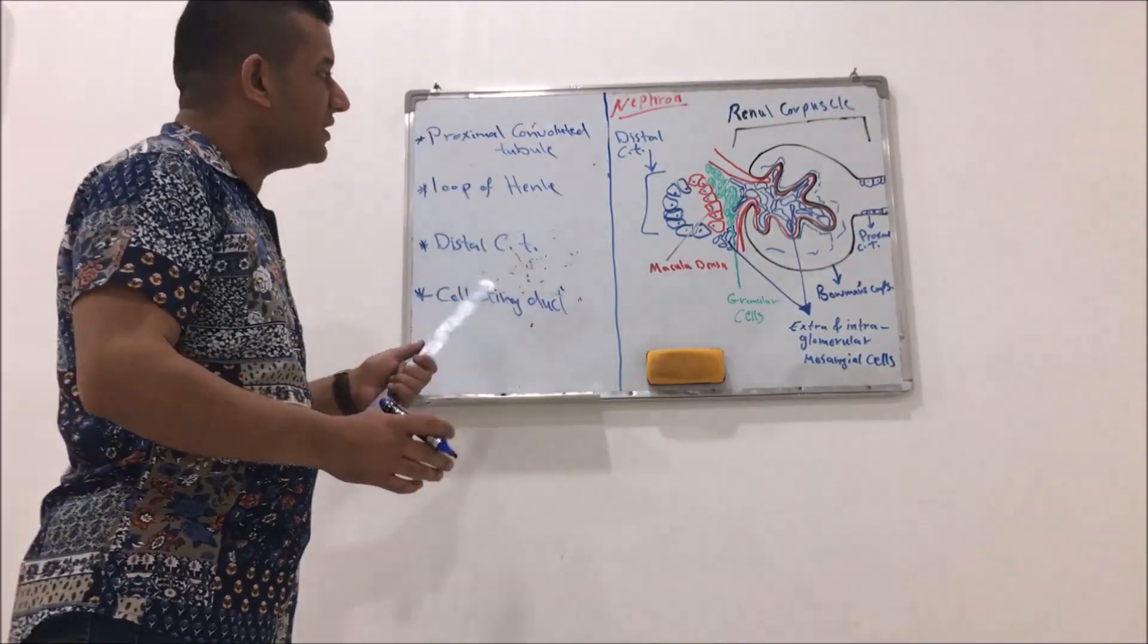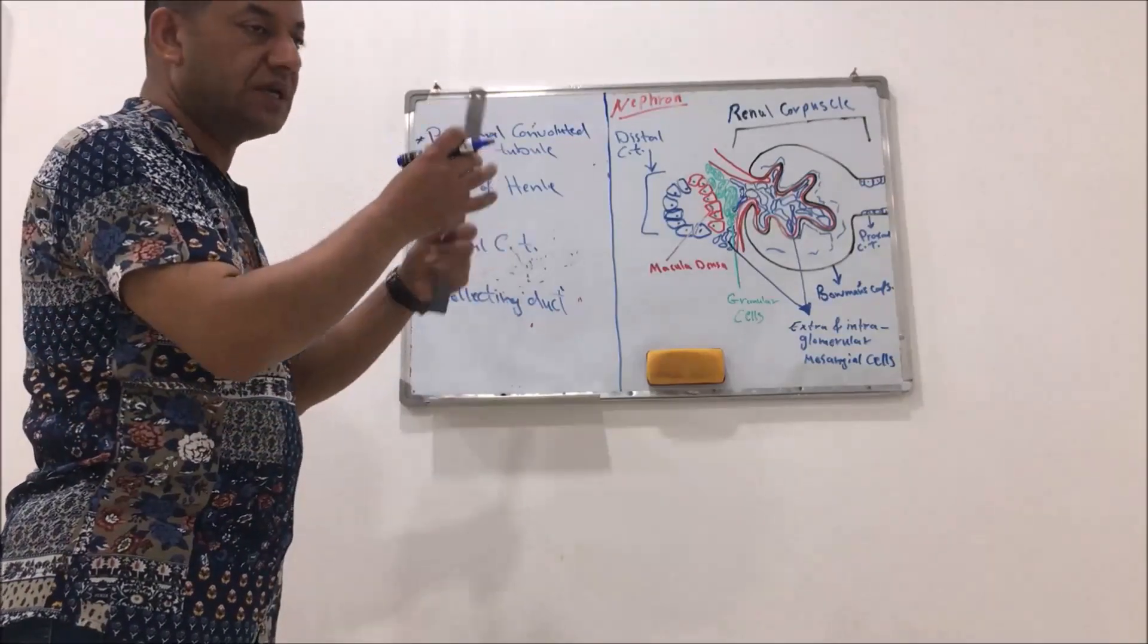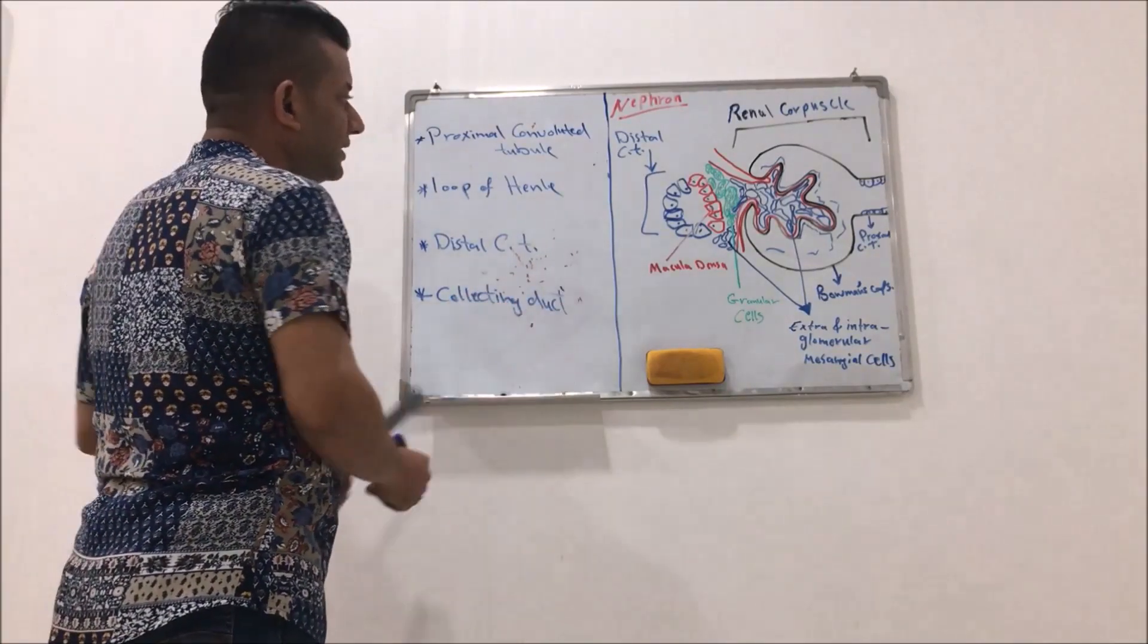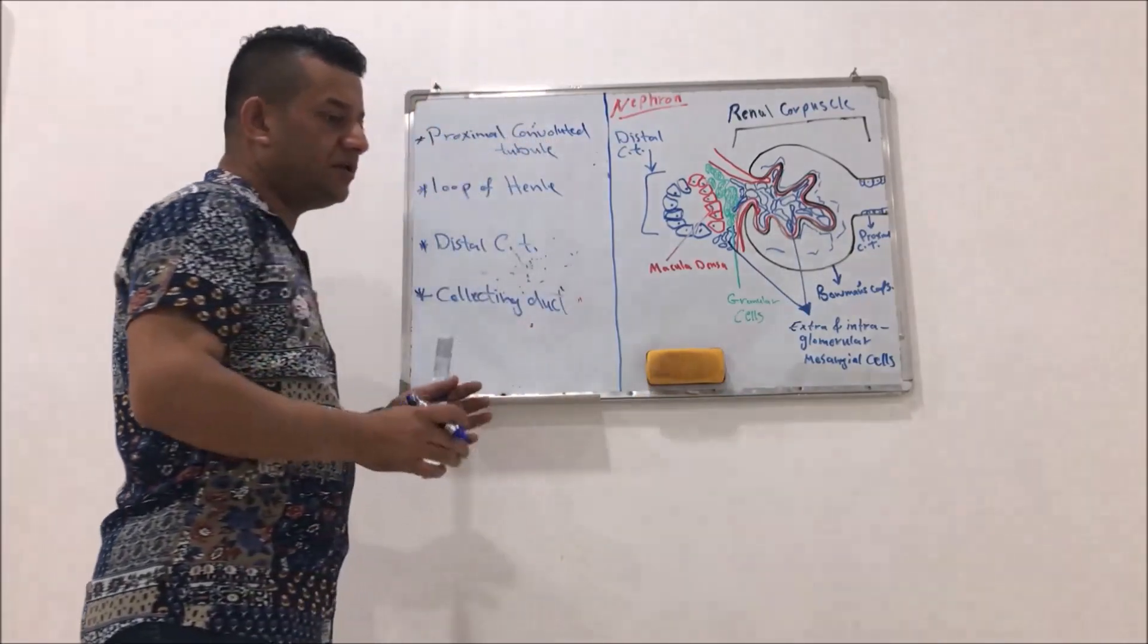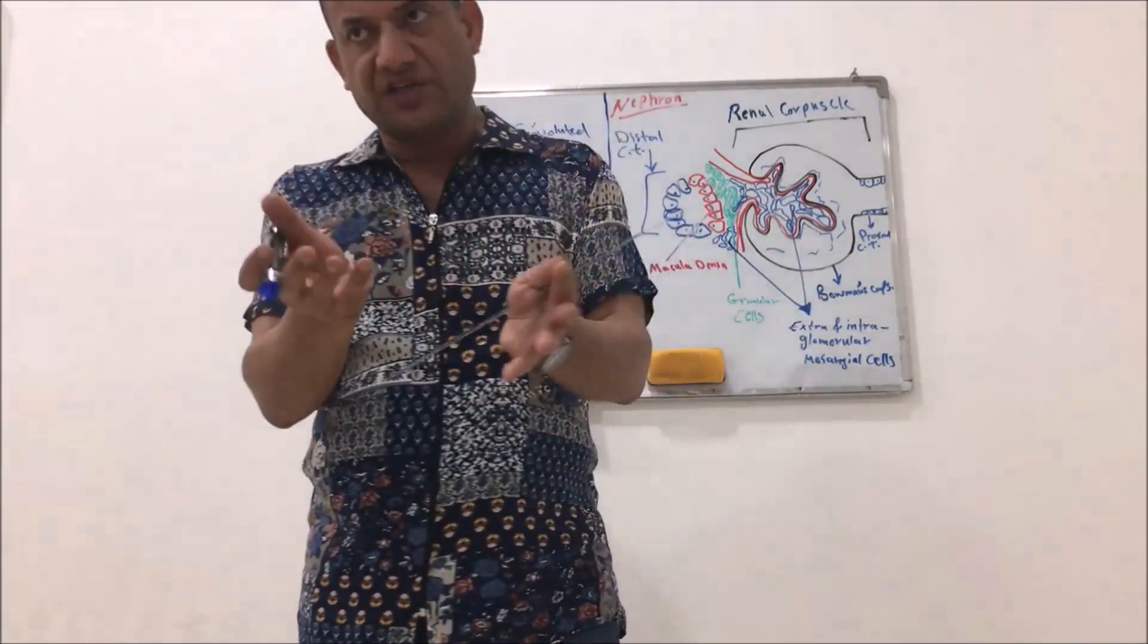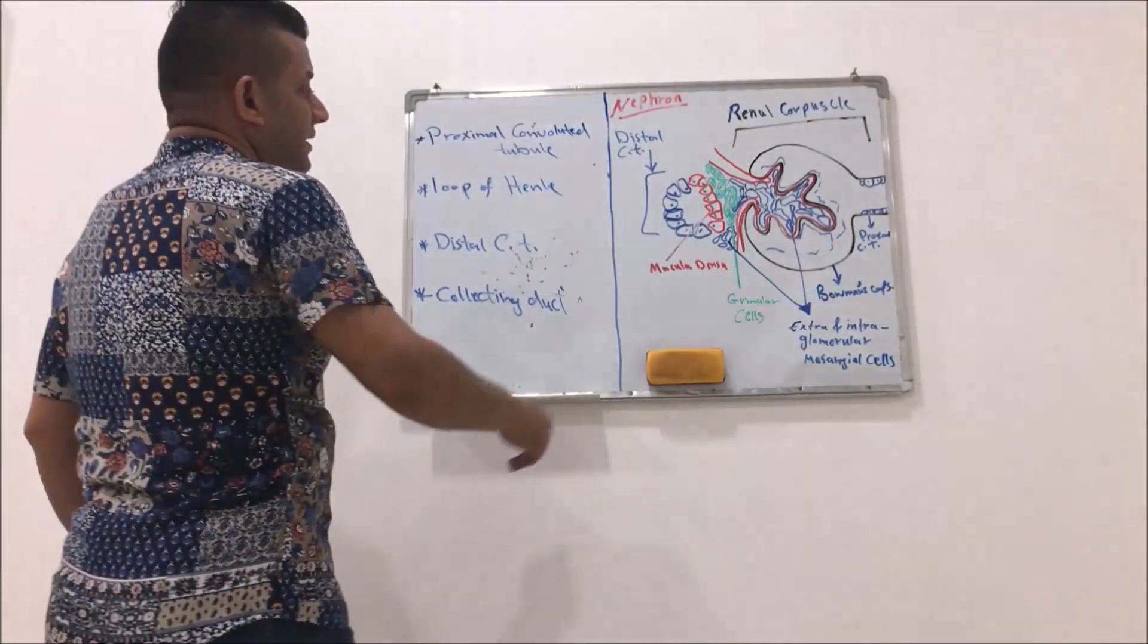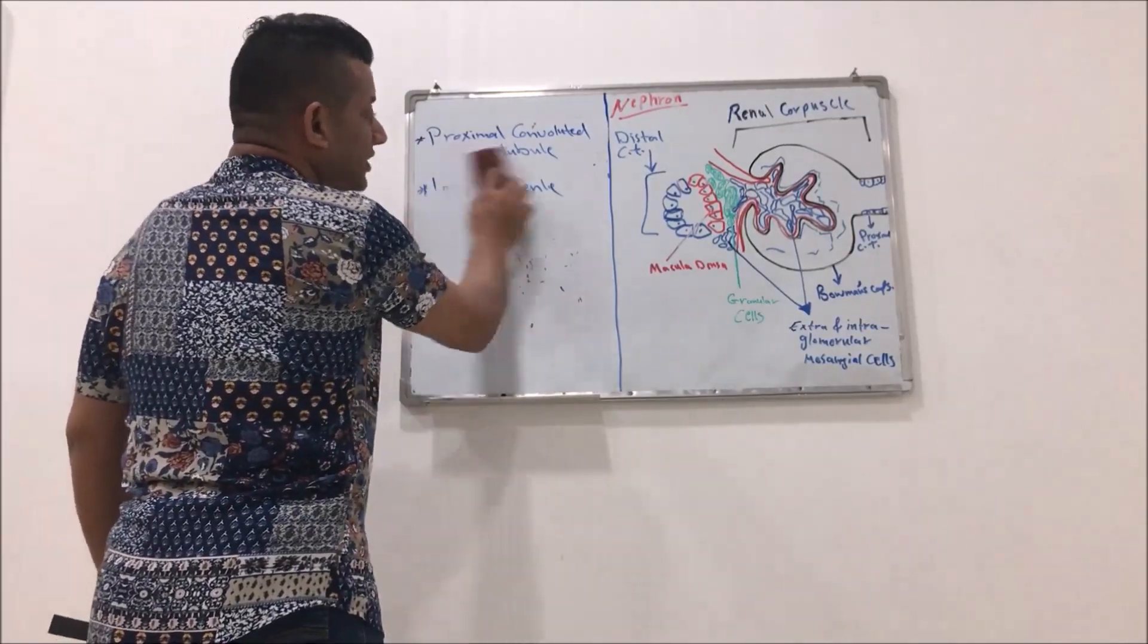In addition to them, there is also Bowman's capsule and glomerulus. All these can be included with the structure of each one nephron. Now, let's speak about the histological structure.